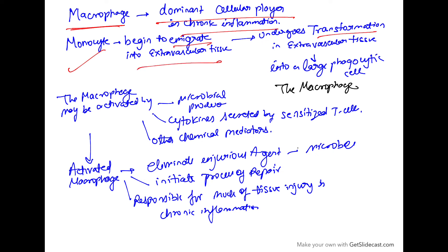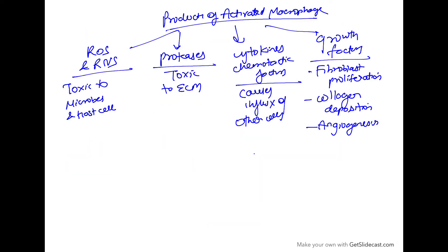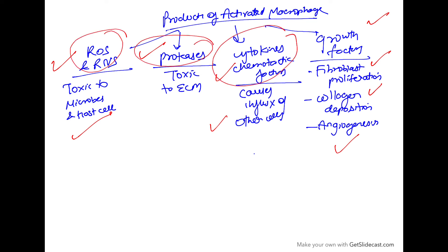Macrophages can be activated by microbial products, cytokines secreted by activated T cells, or other chemical mediators. These activated macrophages eliminate the injurious agent and microbes, initiate the process of repair, and are also responsible for much of the tissue injury in chronic inflammation. The products of activated macrophages include: reactive oxygen and nitrogen species (microbicidal and toxic to host cells), proteases (toxic to extracellular matrix), cytokines and chemotactic factors (causing influx of other cells), and growth factors (causing fibroblast proliferation, collagen deposition, and angiogenesis).